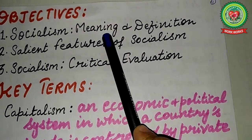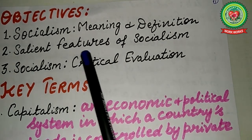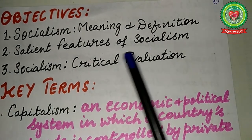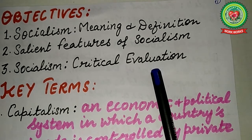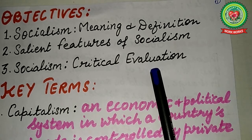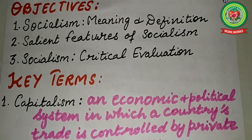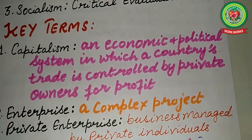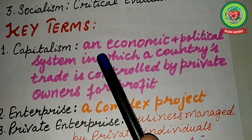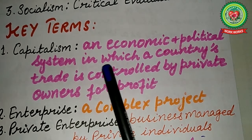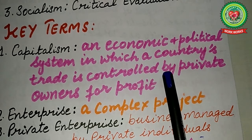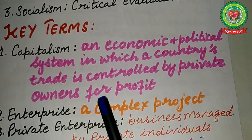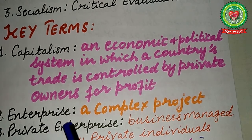Before discussion of these objectives, I would like to discuss the key terms with you. The first key term is capitalism. It means an economic and political system in which a country's trade is controlled by private owners for profit.